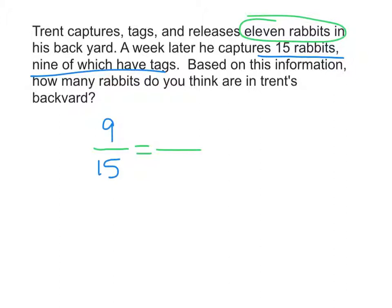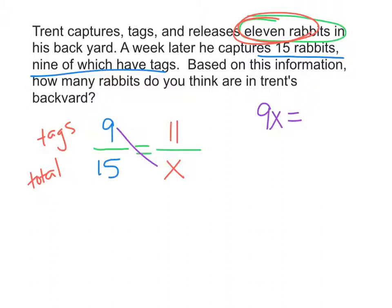Now we go back to the 11 rabbits that have tags in his backyard. Since the top row represents tagged animals and the bottom row represents totals, we put the 11 across from the nine. The total then would be X. Now all we need to do is use cross products to solve: nine times X equals 9X, and 15 times 11 gives us 165.